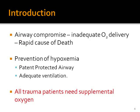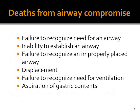Airway compromise results in inadequate oxygen delivery and is a rapid cause of death in trauma. Hypoxemia can be prevented only if we have a patent, protected airway and adequate ventilation — in trauma, either of these could be affected. All trauma patients require supplemental oxygen. Deaths from the airway can result from: inability to recognize the need for an airway, inability to establish one, improper establishment, displacement of an unsecured airway, failure to recognize the need for ventilation, and aspiration of gastric contents.